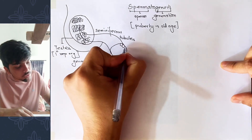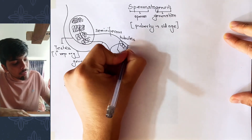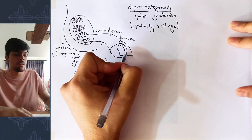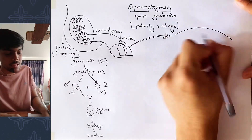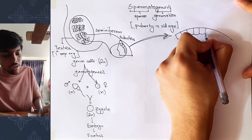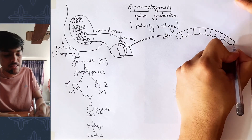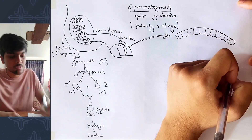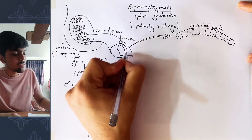The wall of the seminiferous tubules contains germinal epithelium — a special type of epithelium responsible for the formation of gametes. Zooming into a piece of this germinal epithelium, from the chapter of animal tissue you may already know it is a simple cuboidal epithelium, meaning it contains cube-like cells arranged in a single layer. These cuboidal cells are the germ cells responsible for the formation of gametes, lining the wall of the seminiferous tubules.